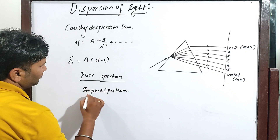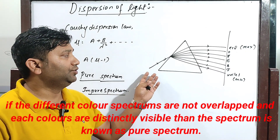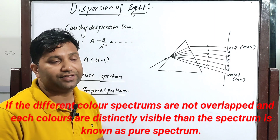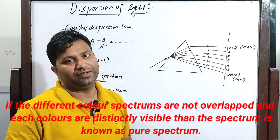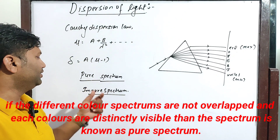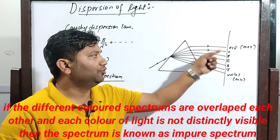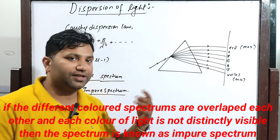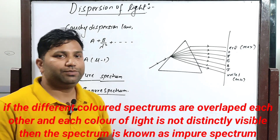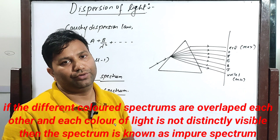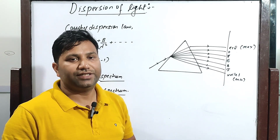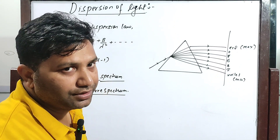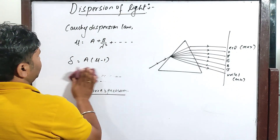What is a pure spectrum? If the colored lights or colored spectrums are not overlapping each other, and all the colors are distinctly visible, then that is known as a pure spectrum. If the colors overlap each other, it is called an impure spectrum. Now further we will be discussing about chromatic aberration of lenses.